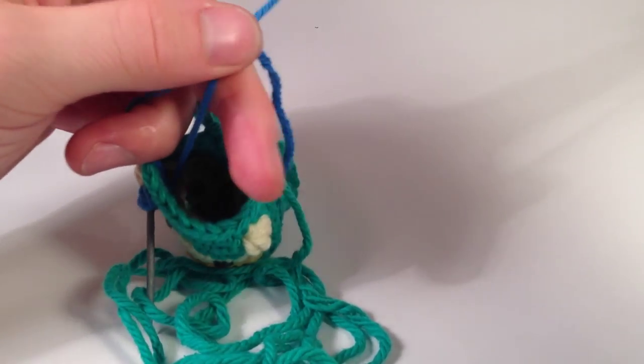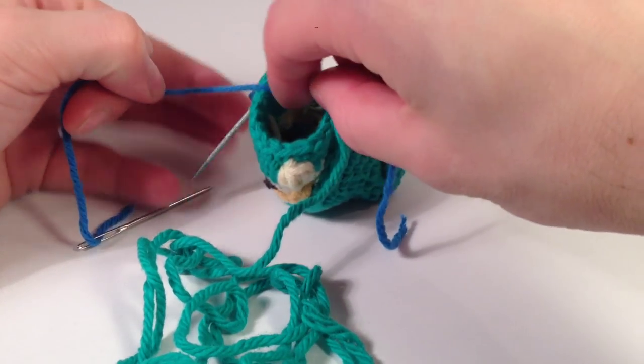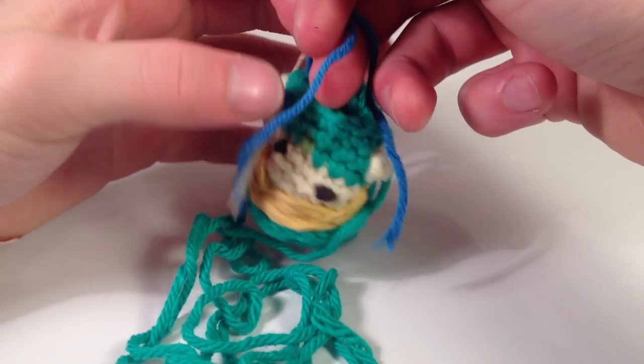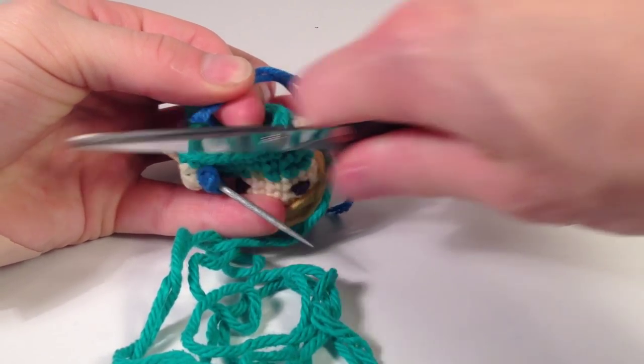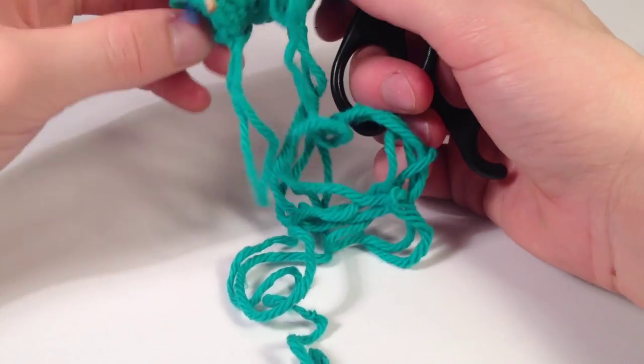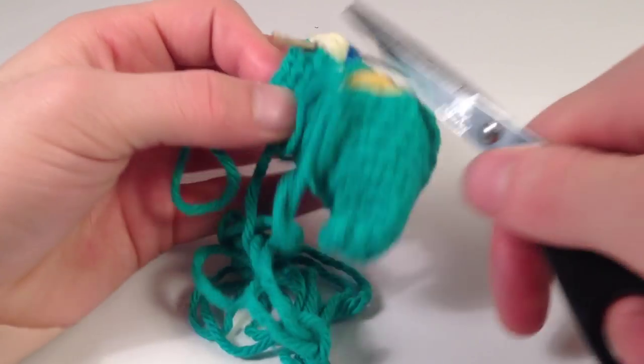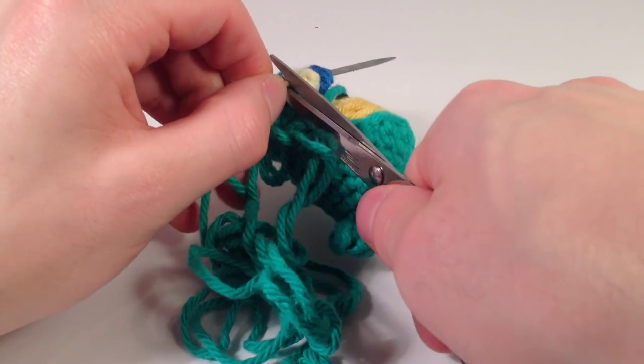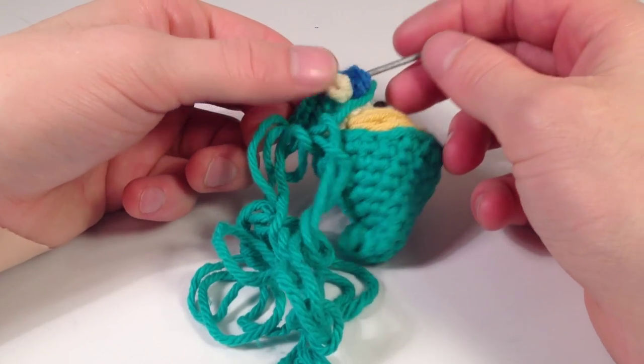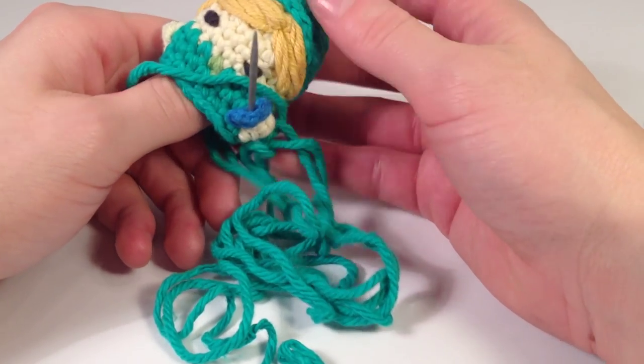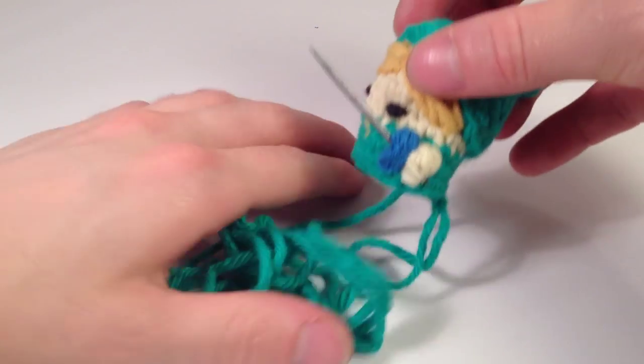And I would double knot it if I were you, because it'll come out if you don't. Now we're going to get our scissors, cut it off inside, and then now we go to the end of our sword, and we cut off the end, and it's pretty easy. There we go, and there is our sword for Link. So you've just got to add a shield to him and finish him off, and there we go. So we'll put him to the side.